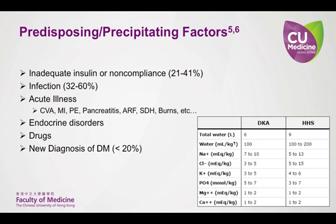With DKA, patients come in because they don't have insulin in their body. With HHS, it is mostly caused by another disease state. So when patients come in with HHS, you are often not just treating HHS but also treating what caused the event to occur. This precipitating event is most commonly either inadequate insulin, non-compliance, or an infection — commonly pneumonia, UTI, or sepsis.